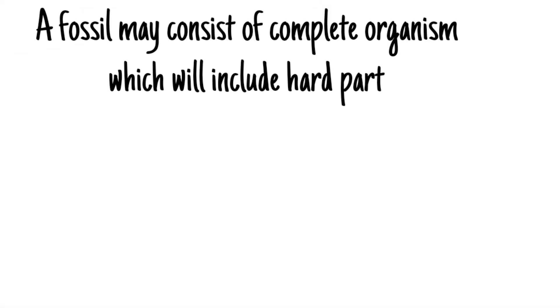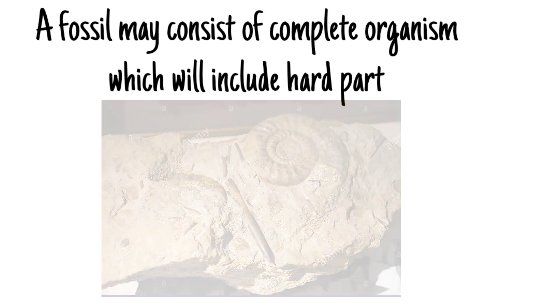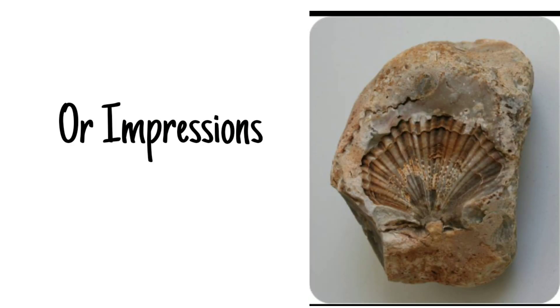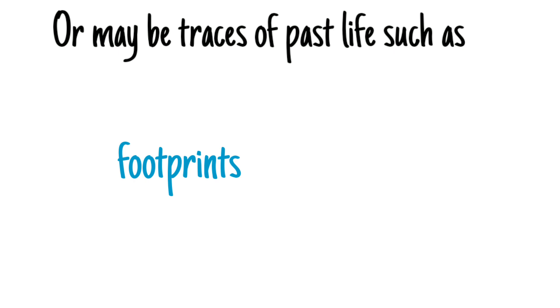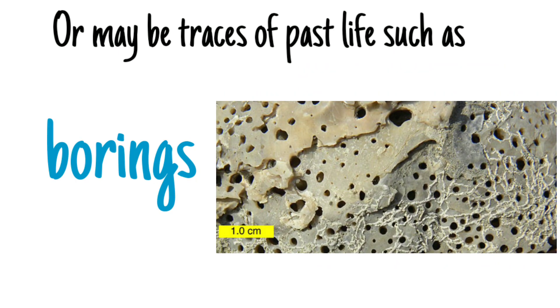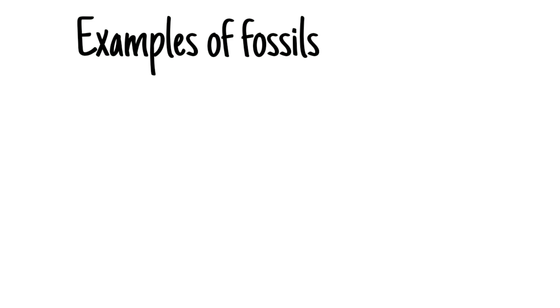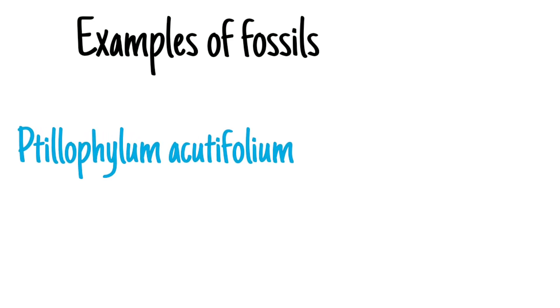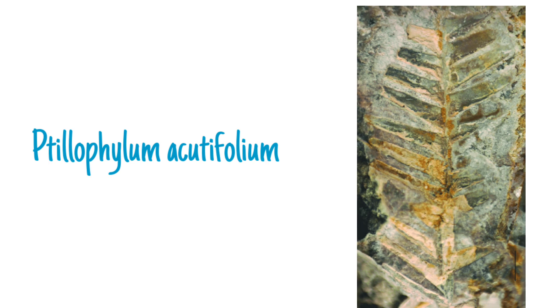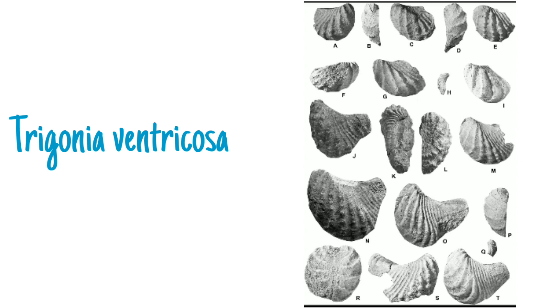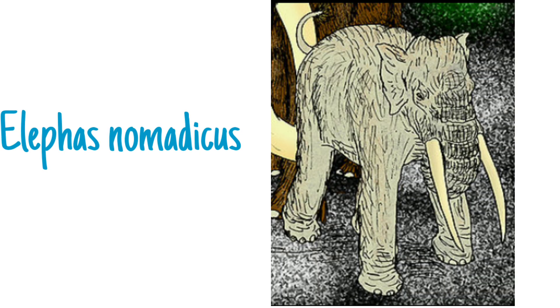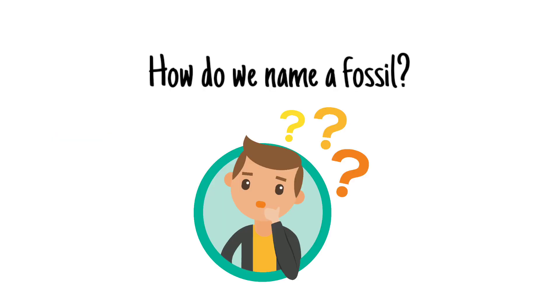A fossil may consist of a complete organism including hard parts, or impressions, or may be traces of past life such as footprints, borings, or burrows of animals. Examples of fossils include Telophilum acutifolium, which is a plant fossil; Trigonia ventricosa, which is an invertebrate fossil; and Elephas nomadicus, which is a vertebrate fossil.